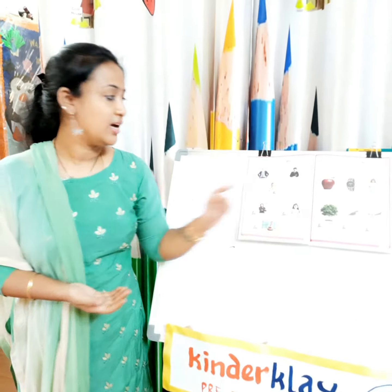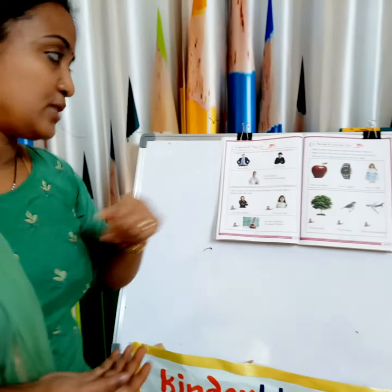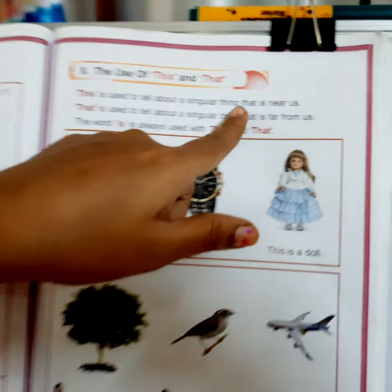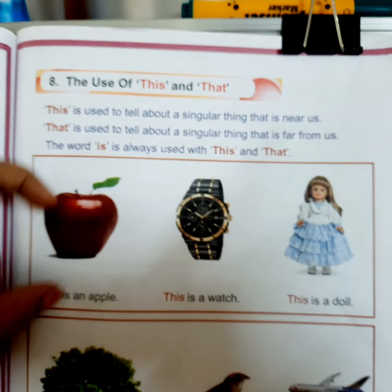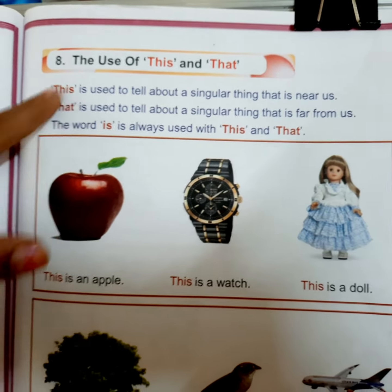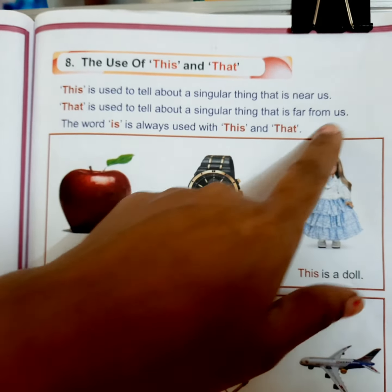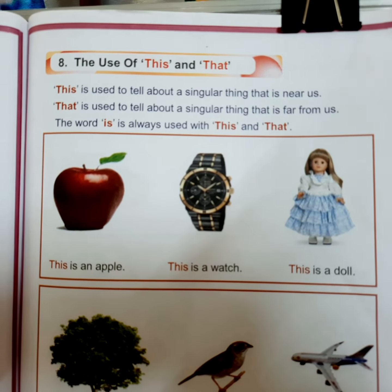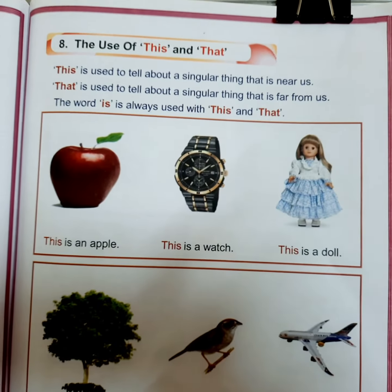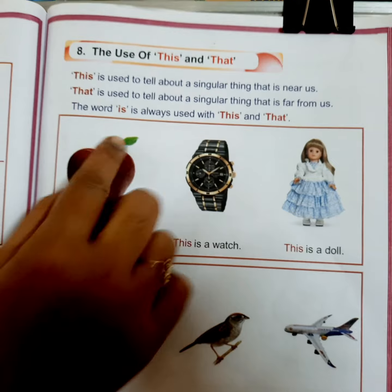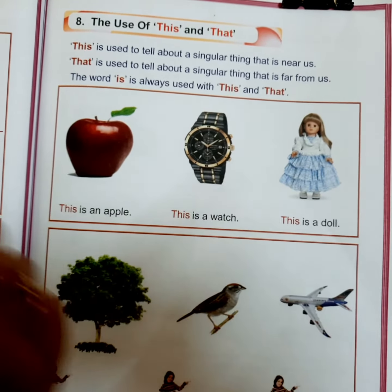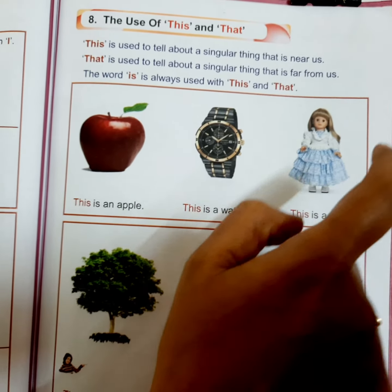I will teach you from the textbook. 'This' is used to tell about a singular thing — only one object — that is near to us. 'That' is used when the object is far from us. And 'is' is used with both 'this' and 'that'. For example: This is an apple. This is a watch. This is a doll.